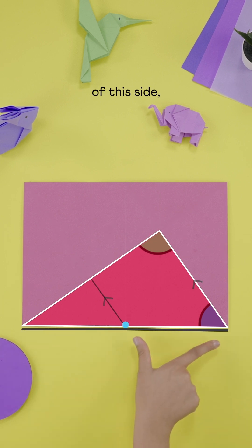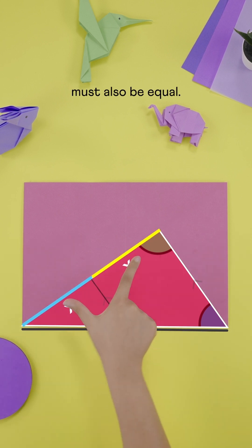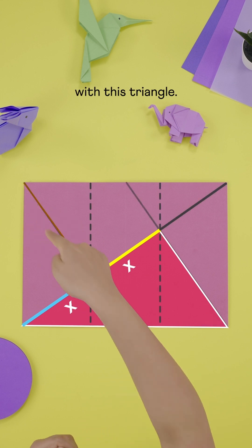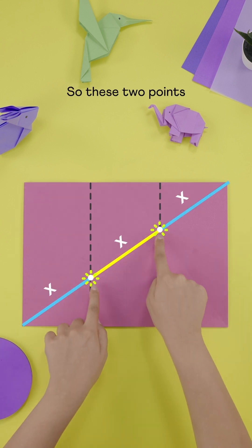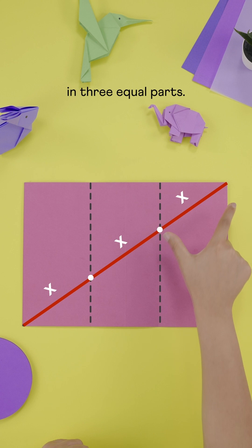Since this is the midpoint of this side, these two sides must also be equal. The same goes with this triangle. So these two points divide the diagonal in three equal parts.